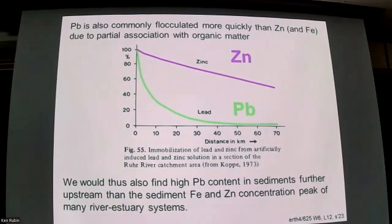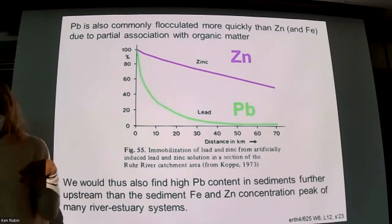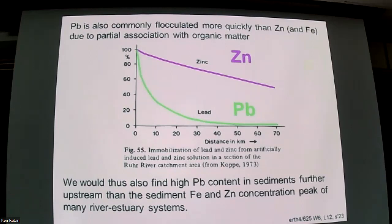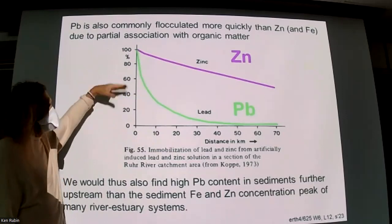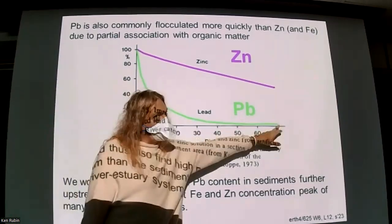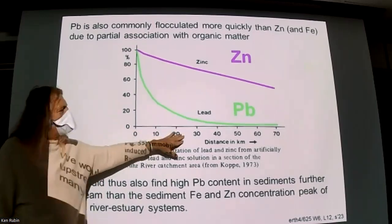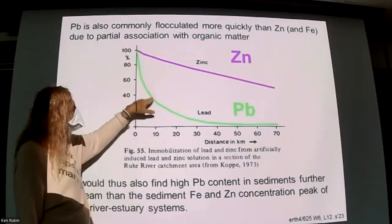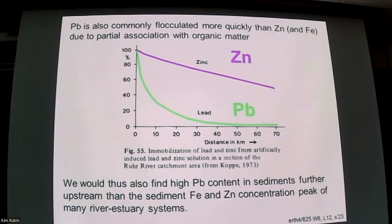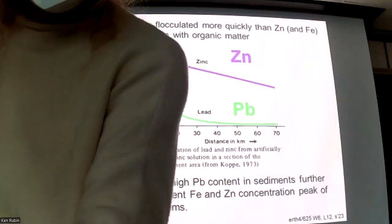This plot shows zinc and lead in early Rhine River experiments. Zinc likes to flocculate with iron; lead has a steeper removal curve, similar to copper. Percent of total on the y-axis, with the gradient going from more river water-like to more seawater-like. The steeper lead curve means lead is removed more effectively with a little salt water — it's associating with something more sensitive that's removed more easily. So in a contaminated river, we might expect to see lead in the sediments farther upriver than zinc.